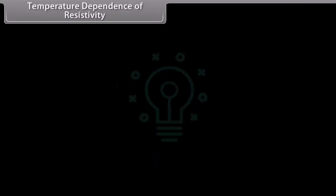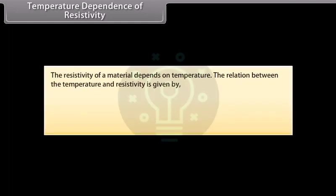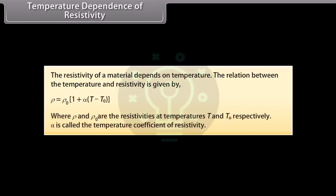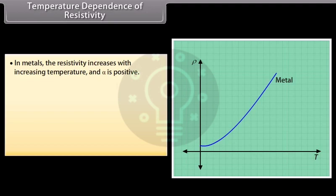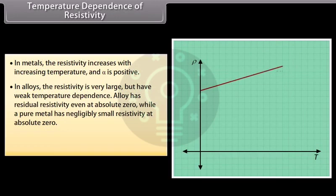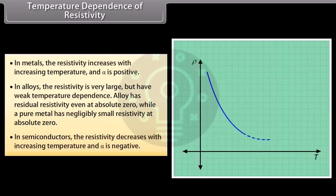The resistivity of a material depends on temperature. The relation is given by rho = rho₀ × (1 + alpha(T − T₀)), where rho and rho₀ are the resistivities at temperatures T and T₀ respectively, and alpha is the temperature coefficient of resistivity. In metals, resistivity increases with increasing temperature and alpha is positive. In alloys, resistivity is very large but has weak temperature dependence, with residual resistivity even at absolute zero. In semiconductors, resistivity decreases with increasing temperature and alpha is negative.